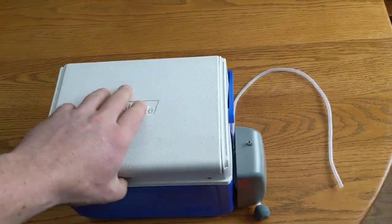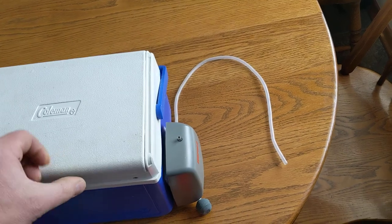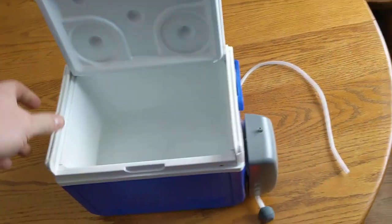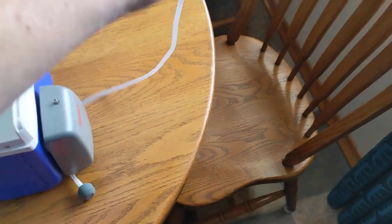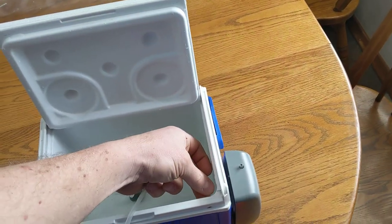Then I took a quarter inch drill bit, drilled a hole through here just under the lid like so, so that I can put my aerator hose through that and still be able to close the lid.